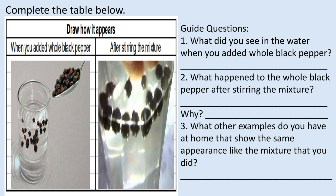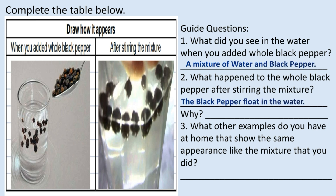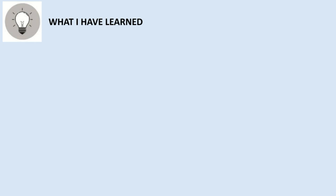Let's check. Number one — what did you see in the water when you added the whole black pepper? Answer: a mixture of water and black pepper. Number two — what happened to the whole black pepper after stirring the mixture? The black pepper floats in the water. Why? Because it is a light substance. Number three — what other examples do you have at home? Mine: oil and water.